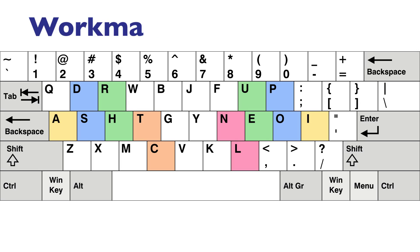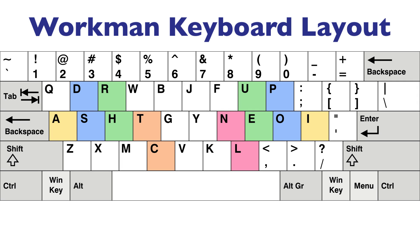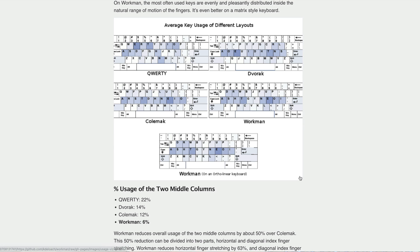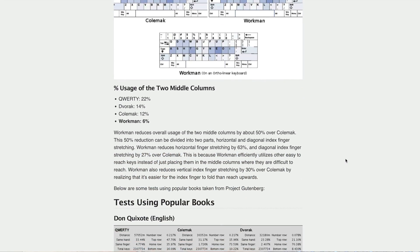There is another, more recent option: the Workman layout. This layout was developed more recently and is supported by default on Linux computers. Instead of basing the layout on how many times each key is used when typing, this layout focuses on lowering the overall travel distance of your fingers. According to an article cited on Wikipedia, this layout reduces the overall travel distance of your fingers even compared to the Colemak layout.